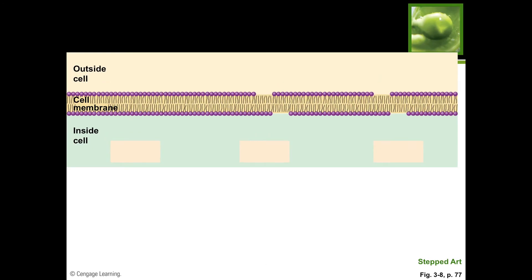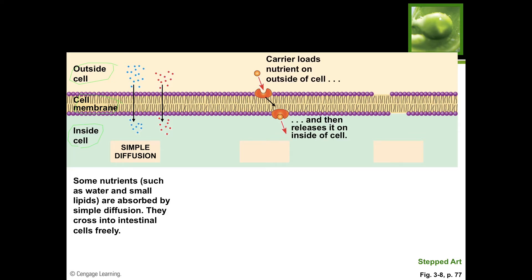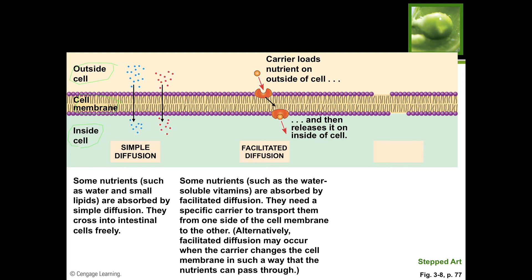Here you have the outside of your cell, the cell membrane in the middle - a phospholipid bilayer - and the inside of the cell. Simple diffusion is just that: small nutrients such as water and small lipids simply diffuse through and cross the cell membrane freely, because they are small enough to come and go as they please.